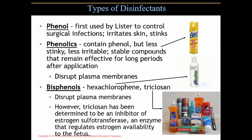Bisphenols — the chemical compounds in those are hexachlorophen and triclosan. They disrupt plasma membranes as well. Triclosan is found in many products we use in the bathroom or kitchen. However, it has been determined to be an inhibitor of estrogen sulfotransferase, which is an enzyme that regulates estrogen availability to the fetus. Estrogen is utilized by the developing fetus — both males and females — and is necessary for fetal development into a human being.